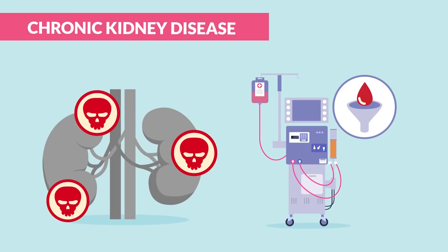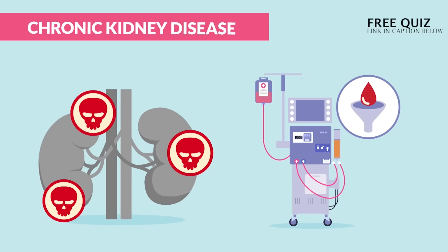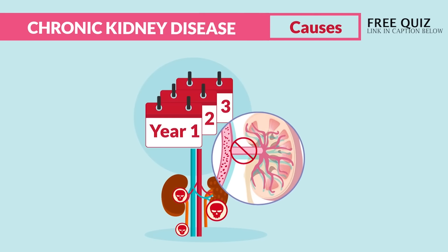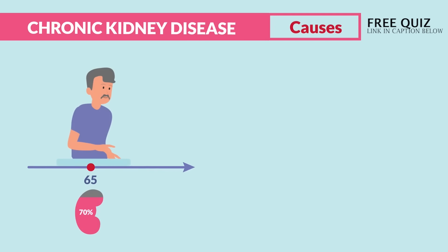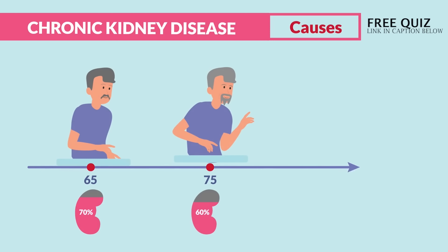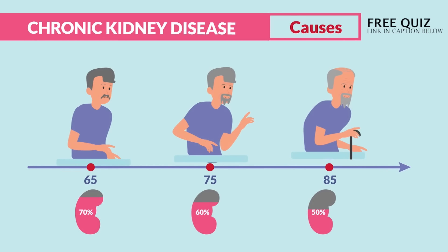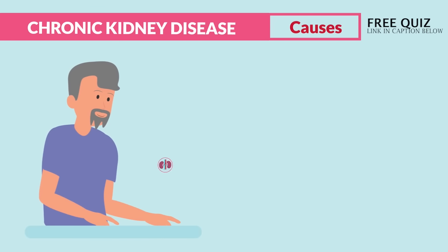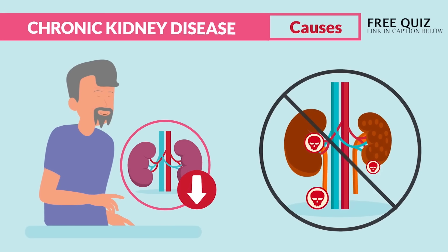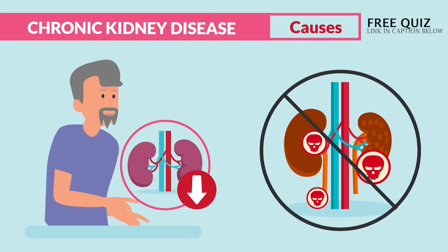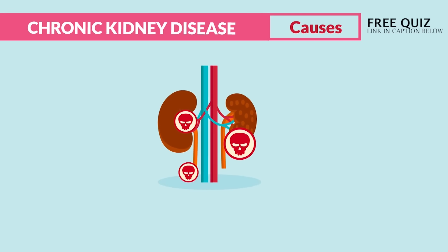Dialysis is that machine version of the kidneys used to wash the blood, which we cover in a separate video. Now let's cover the causes of chronic renal failure. The first cause is older age — geriatrics typically lose 10% of renal function each decade. Technically, older age leads to a physiological decrease of renal function and not renal failure specifically, but you get the idea.